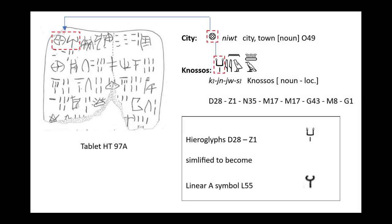Next we have Knossos. Adding further evidence that Linear A is shorthand Middle Egyptian written in modified and simplified hieroglyphs, the most frequently appearing place name in the Linear A corpus is Knossos. That is understandable as Knossos was the capital of Minoan Crete, and while these tablets were written during and by the Egyptian administration, Knossos was a centre of great importance. Linear A symbol L55 is simply a straightforward, simplified representation of its first two hieroglyphs, used as the shorthand representation of the city's full name.